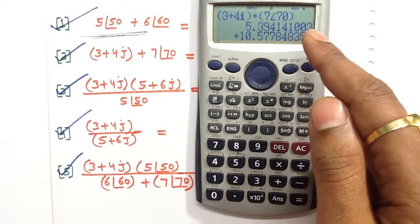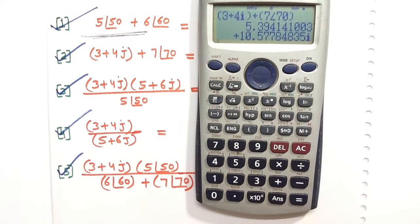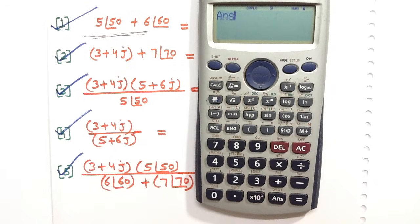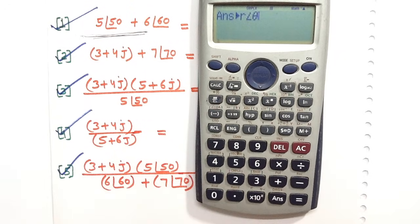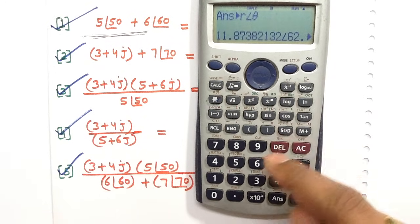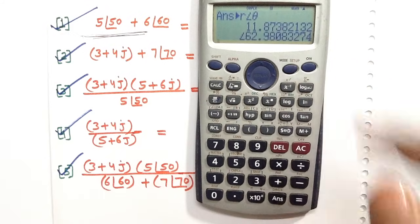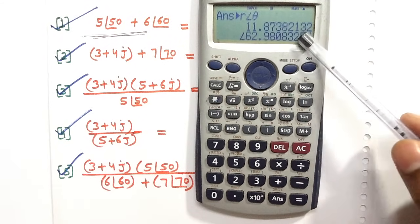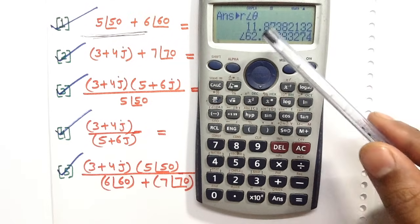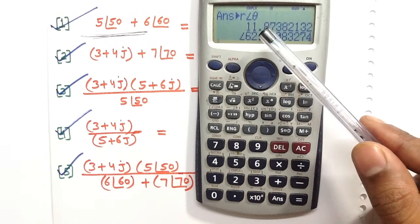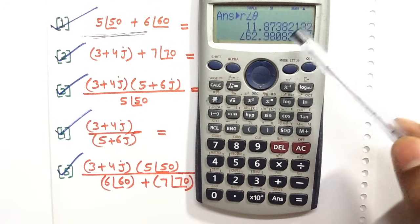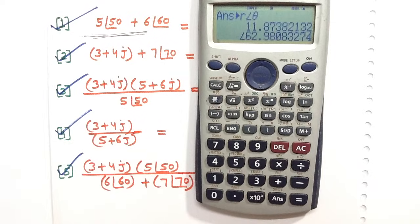The answer of question number two in rectangular form is shown on screen. To convert to polar form, press Answer, then Shift, then 2, then 3, then press equals, then SD to get the complete solution. The answer of question number two in polar form is 11.87 angle 62.98. Question number two is complete.